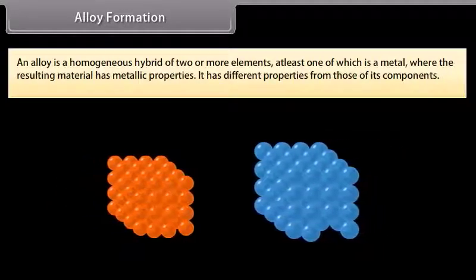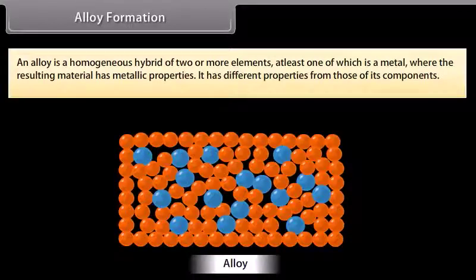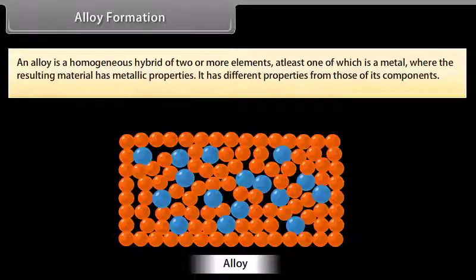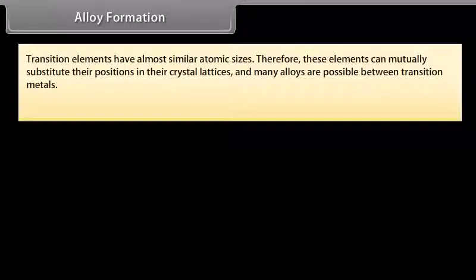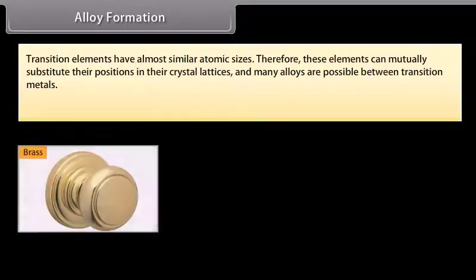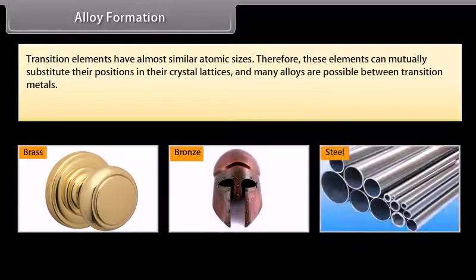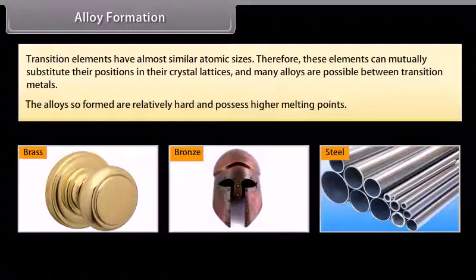An alloy is a homogeneous mixture of two or more elements, at least one of which is a metal, where the resulting material has metallic properties. It has different properties from those of its component elements. Transition elements have almost similar atomic sizes; therefore, they can mutually substitute their positions in their crystal lattice and many alloys are possible. Examples include brass, bronze, and various types of steel. The alloys so formed are relatively hard and possess higher melting points.